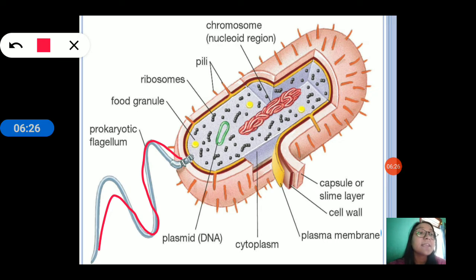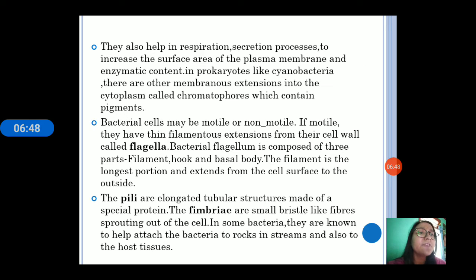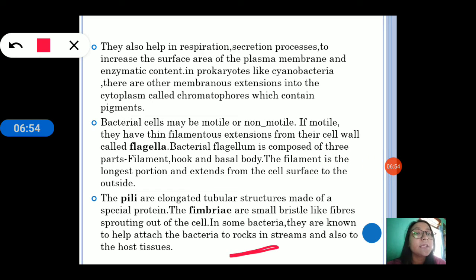Flagella is made of three parts: filament, hook, and the basal body. The filament part is the longest portion of the flagella. Besides flagella, bacteria also have pili, and some bacteria also have fimbriae. These fimbriae help the bacteria in attaching to rocks in streams and also to host tissues.